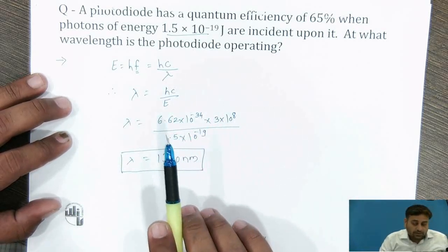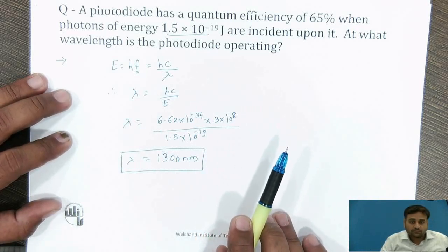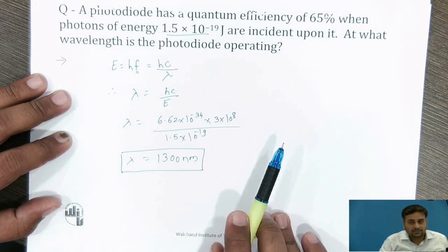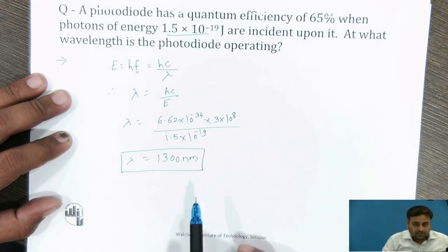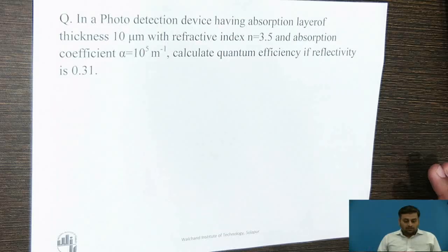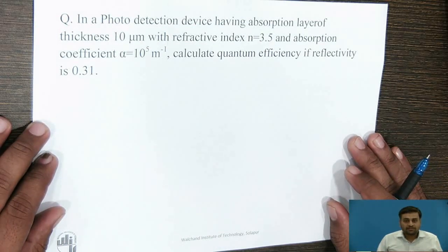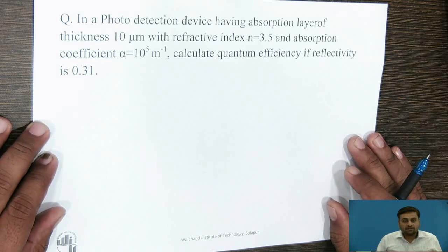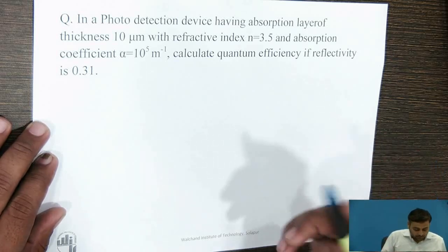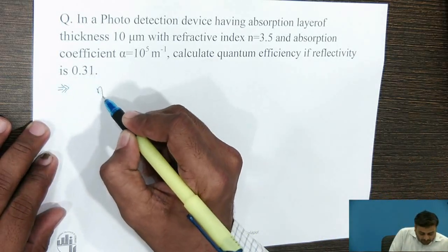So a photodiode with a quantum efficiency of 65%, when photons of energy 1.5 × 10⁻¹⁹ joule are incident upon it, has an operating wavelength of 1300 nanometers. We will go for another numerical: in a photo detection device having an absorption layer of thickness 10 micrometer, with a refractive index of 3.5 and absorption coefficient alpha = 10⁵ per meter, calculate the quantum efficiency if reflectivity is 0.31.